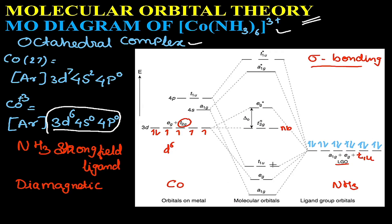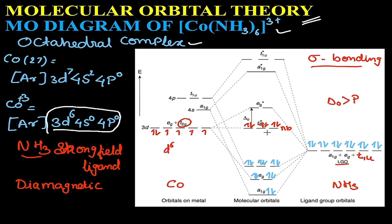The electrons brought by the ligand fill into the bonding molecular orbitals first. After the bonding molecular orbitals are filled, the metal electrons are filled. Since ammonia is a strong field ligand, the magnitude of the splitting energy (delta o) is higher than the pairing energy. As a result, the fourth electron will not go into eg; instead, all six metal electrons will pair up in t2g.